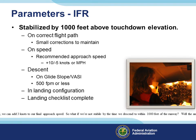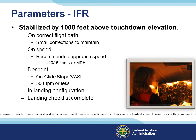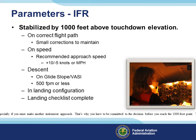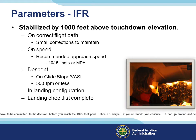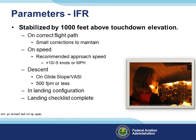What if we're not stable by the time we descend to within 1,000 feet of the runway? The answer is simple: we go around and set up a more stable approach on the next try. This can be a tough decision to make, especially if you must fly another instrument approach. That's why you have to be committed to the decision before you reach the 1,000-foot point. If you're stable, continue; if not, go around and set up again.